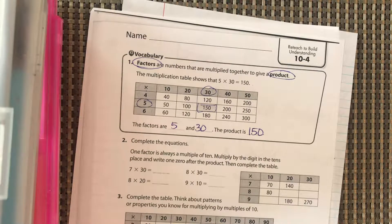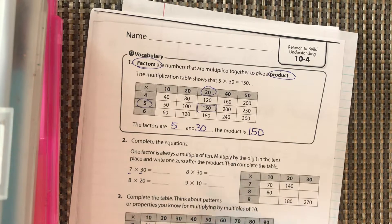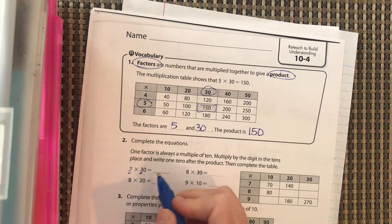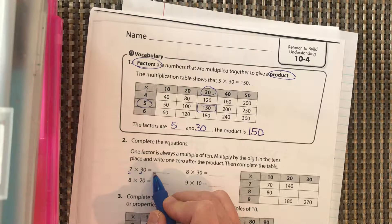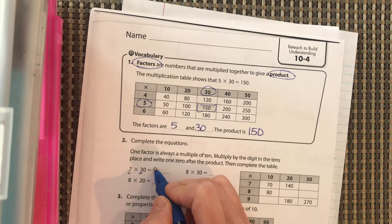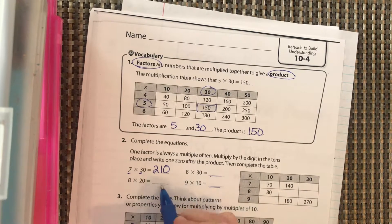Multiply by the digit in the tens place—this is this one right—and then write a zero afterwards. Okay, so seven times three, write what seven times three is, should be 21, and then bring a zero over. I want you to pause and I want you to answer these three.